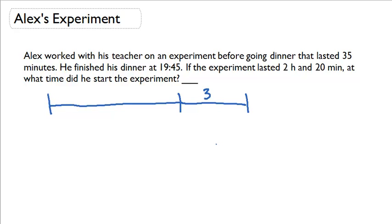If we know the dinner was 35 minutes long and the experiment was 2 hours and 20 minutes long, how long did it take for this entire time? Well, we can just add these two together and we get 2 hours and 55 minutes.